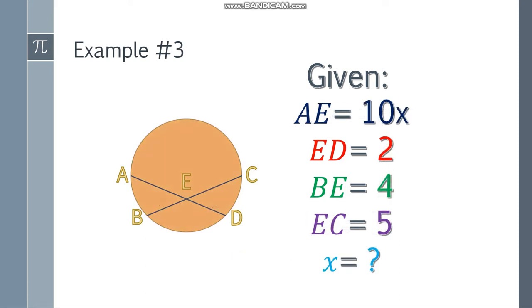Moving on, let's go to example number 3. What if we have a given like AE is 10X, and ED is 2, BE is 4, and EC is 5. What is the value of X? We are asked to find the value of X.